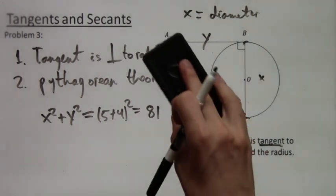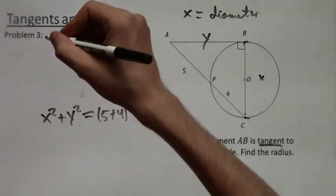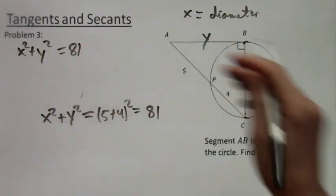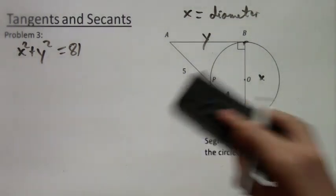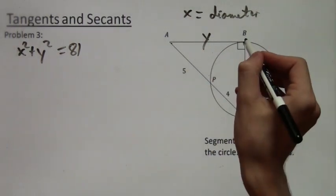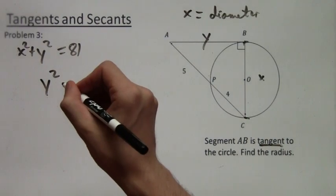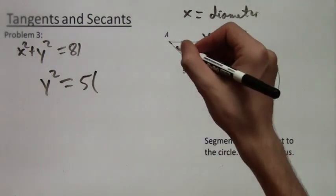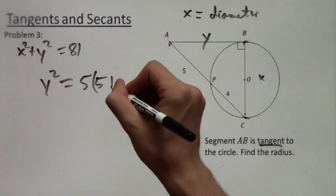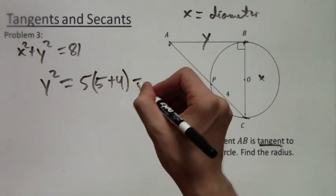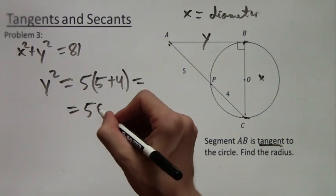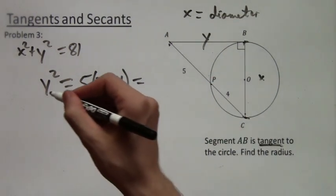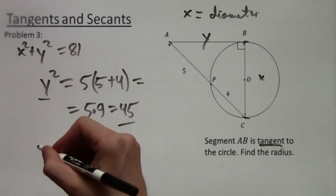So now we want x. But to get x, we need y. So now we need to calculate y somehow. But y we can do pretty easily. It's tangent to the circle, so we apply the theorem that we learned in this lesson. y squared equals 5 times 5 plus 4. And that is equal to 5 times 9, which is 45. And in fact, we don't actually need to solve for y, because we just need y squared in that equation.